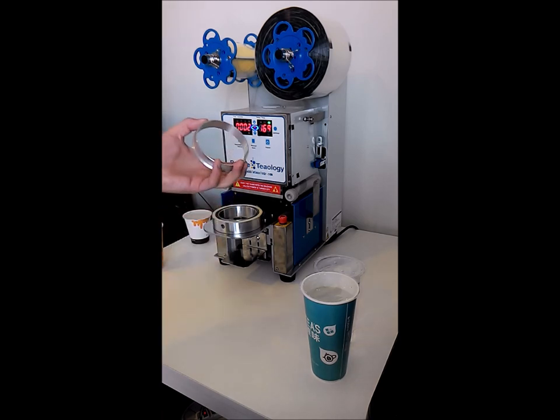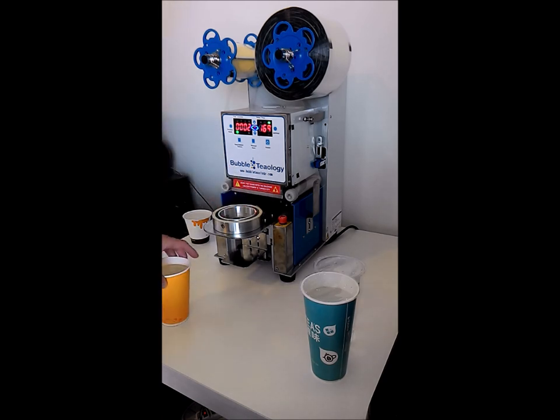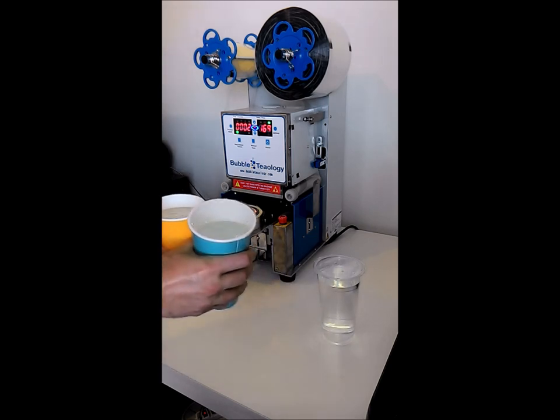So this is an adapter for a 90 millimeter cup. So what we'll do is we'll just set that ring on there, and now we have this paper cup which you can see the diameter is smaller.